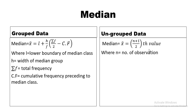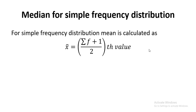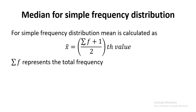Here, n represents the number of observations. For simple frequency distribution, the formula looks similar to the ungrouped formula, but instead of n+1, it is (ΣF + 1) / 2. Simple frequency distribution is a tabular form where observations are listed with their corresponding frequencies, and ΣF represents the total frequency.